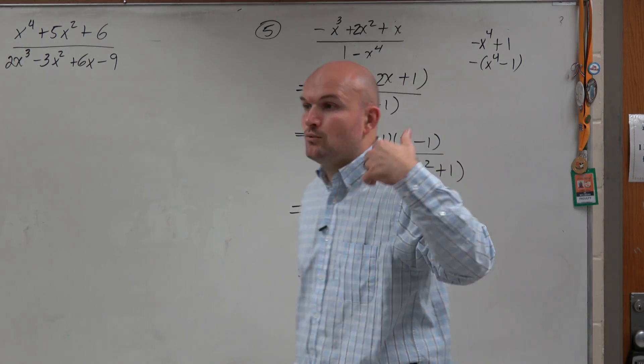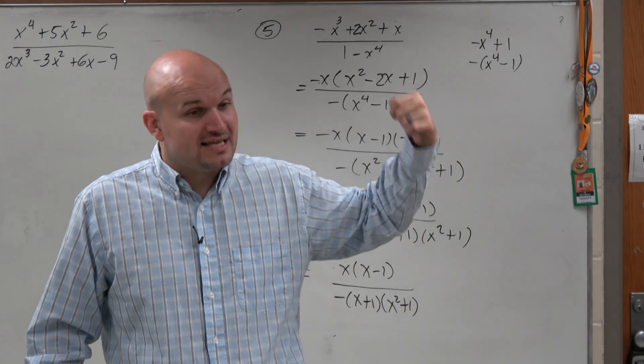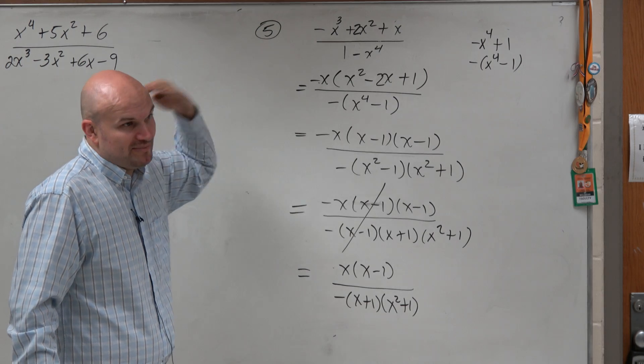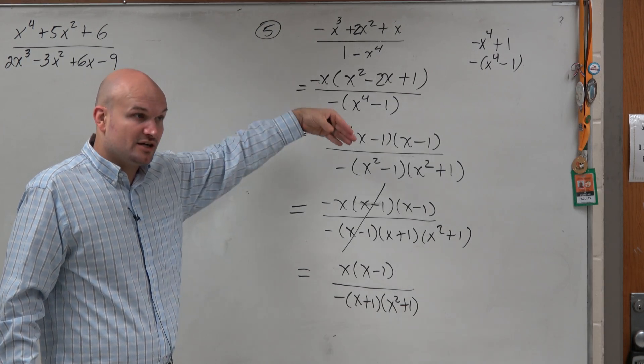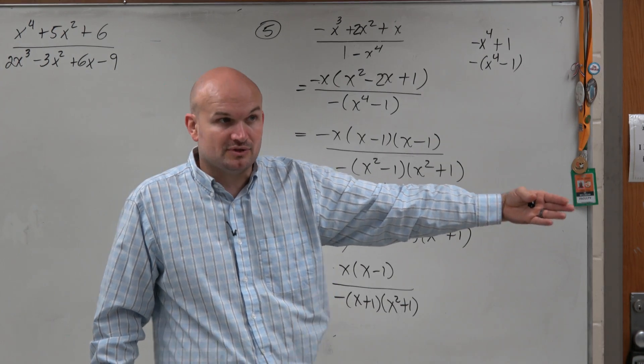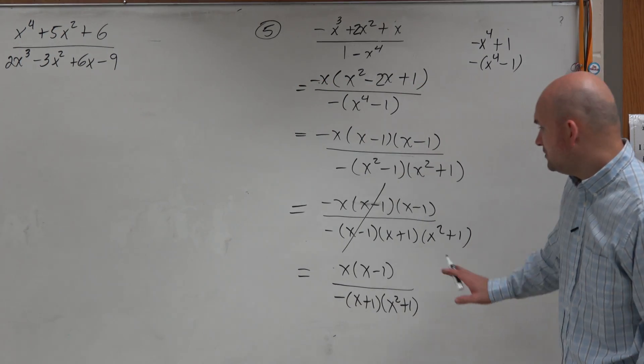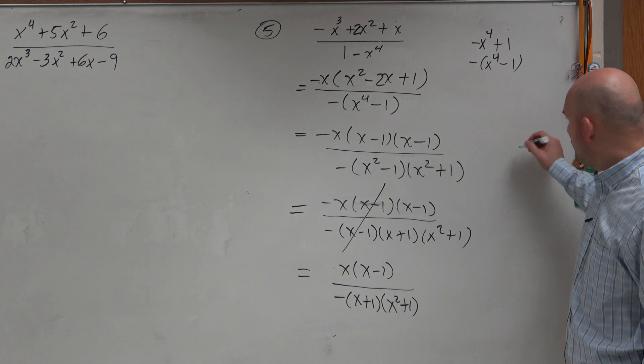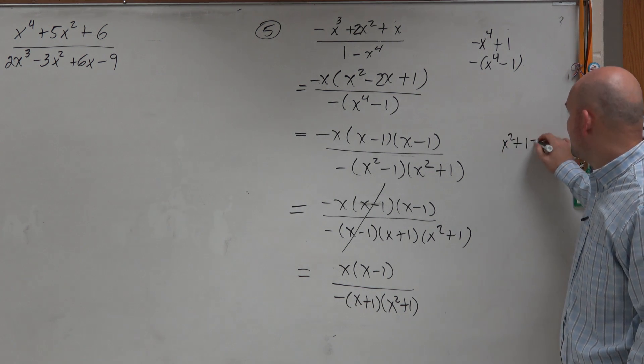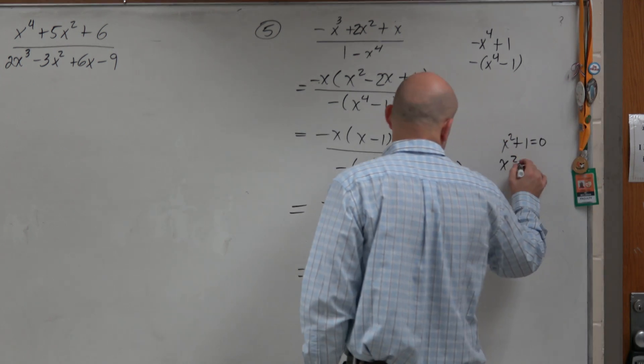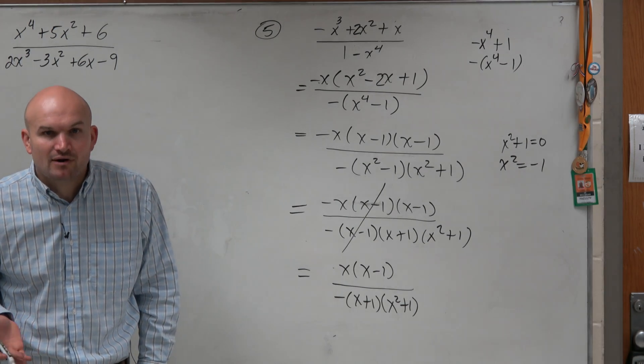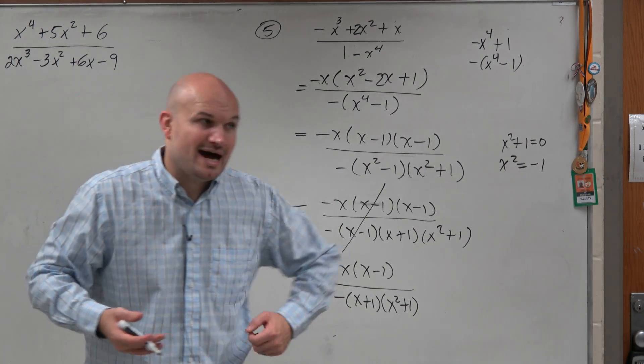Now the other thing is we've got to go back and identify what were the values of x that could not be in my domain. What we need to do is go back and look at our original problem. Basically, what are the values that cannot be for x that would make my denominator equal to 0? Well, what we could do is kind of like what we did for the domain earlier. If I set each factor equal to 0, x squared plus 1, hopefully you guys would see that that's going to give you plus or minus i.